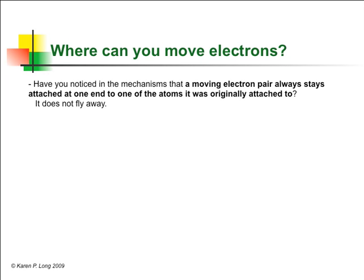So, to where are you allowed to move electrons? Have you noticed what happens in the mechanisms we've done? Note that in every example, the electrons that were moved stayed attached to one of the original atoms when they were moving. They cannot fly away.